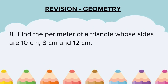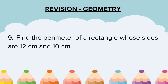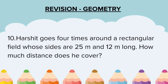Question 8: Find the perimeter of a triangle whose sides are 10 cm, 8 cm, and 12 cm. Question 9: Find the perimeter of a rectangle whose sides are 12 cm and 10 cm. Question 10: Harshit goes four times around a rectangular field whose sides are 25 m and 12 m long. How much distance does he cover?